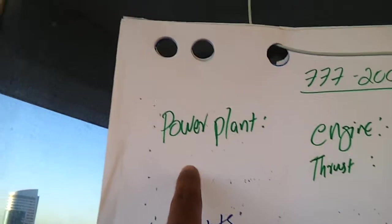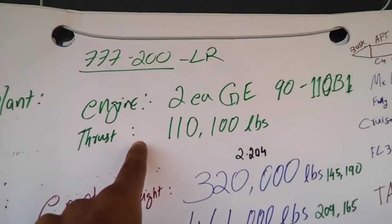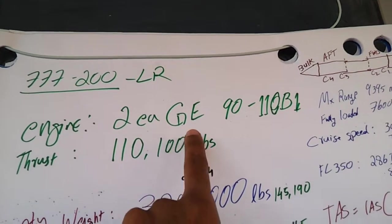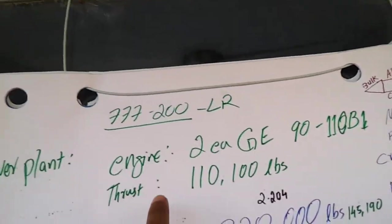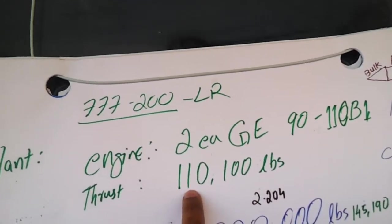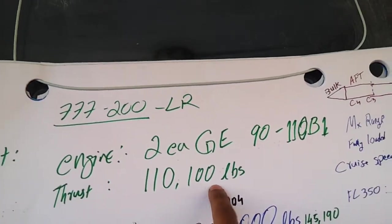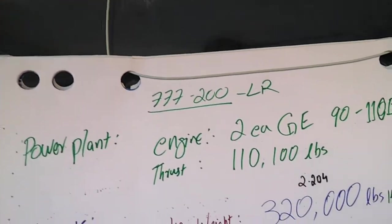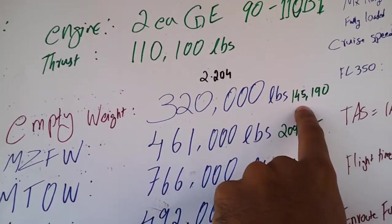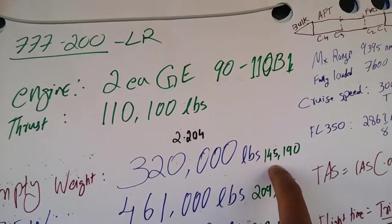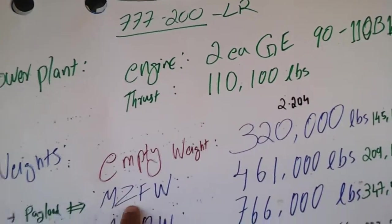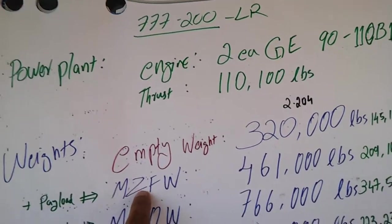The first thing about the power plant - the engine mentioned here is 2 EA GE90-110B1 and the thrust it delivers corresponding to this number is 110,100 lbs. The basic empty weight is, I'll say in kilograms, 145,190.